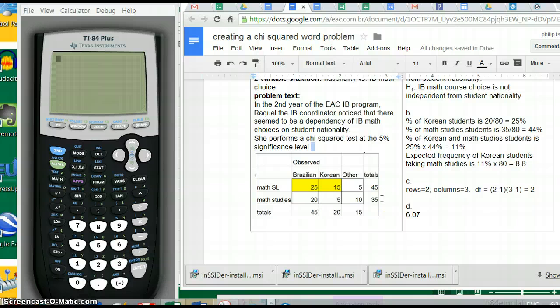This percentage would be 35 divided by 80, which is 44%. This column is 20 divided by 80, which is 25%. So 25% times 44% gives us 11%. Then we multiply 11% times the total number of students, 80, giving us 8.8 students. So if this was an independent distribution, this 5 would have been 8.8. We calculated it as 44% times 25% equals 11%, multiply 11% times 80, and we get 8.8. Instead, it's 5, which is pretty far away from 8.8.